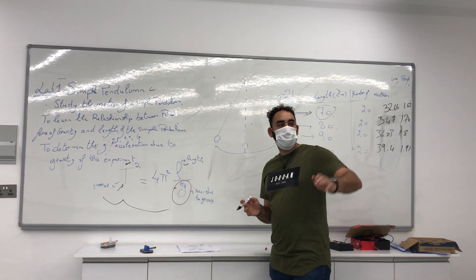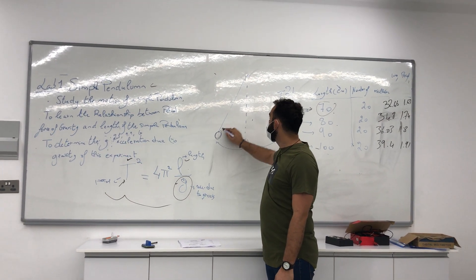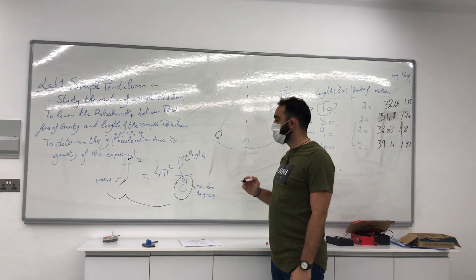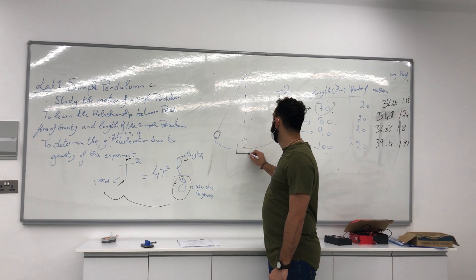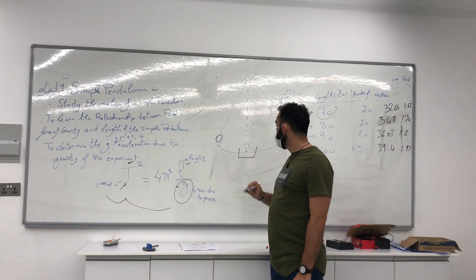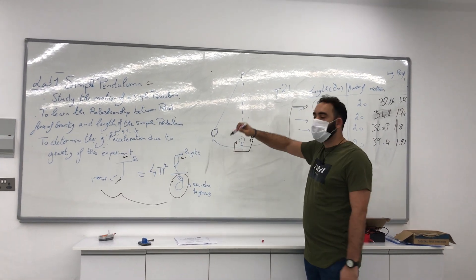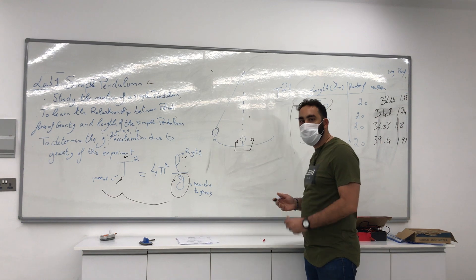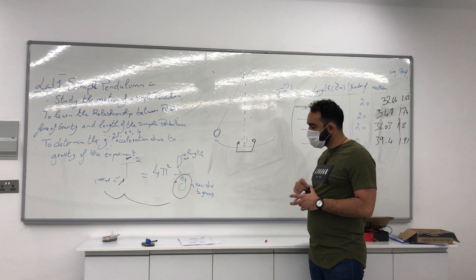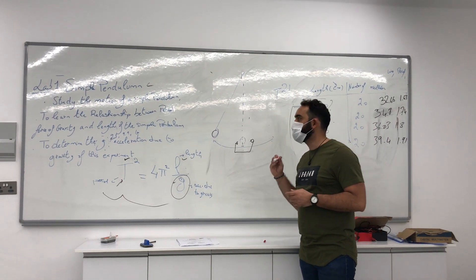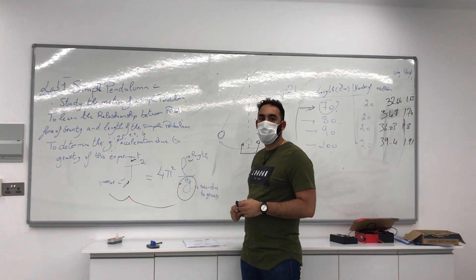We will have a metallic ball attached to a string. The ball will move back and forth in a periodic form. We will have a machine here using sensors — it will see the ball moving and count how many times the ball comes and goes, as well as the time.